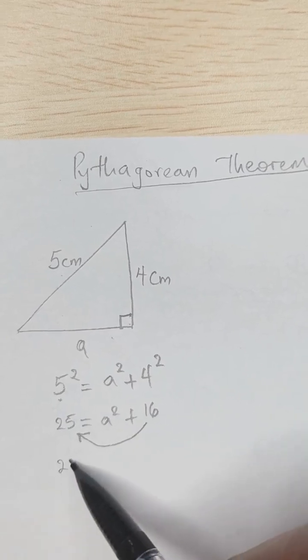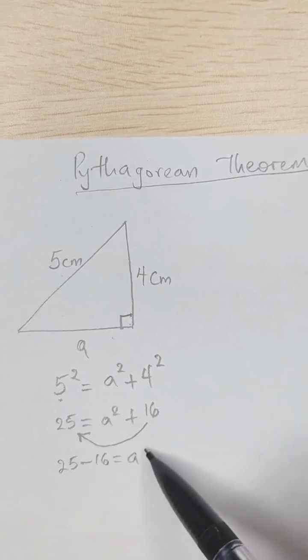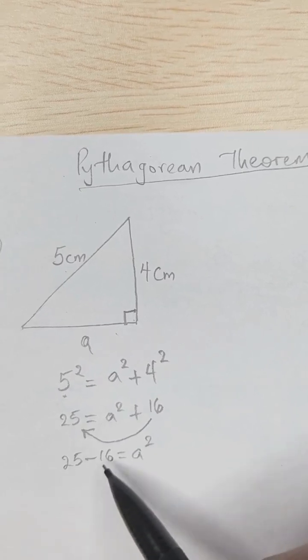So now this becomes 25 minus 16 equals a squared. 25 minus 16 is 9.